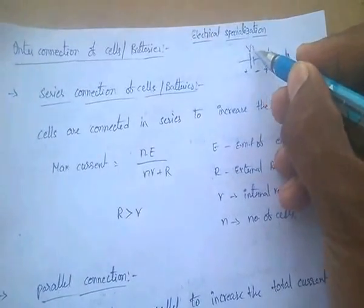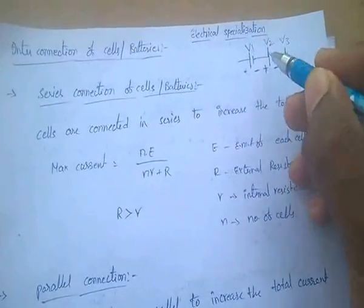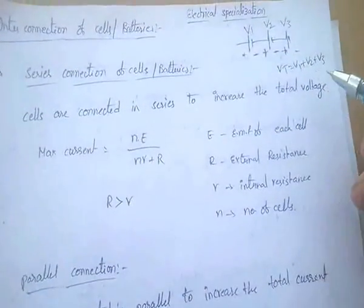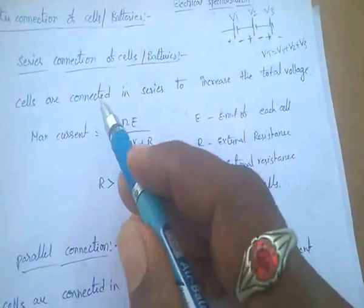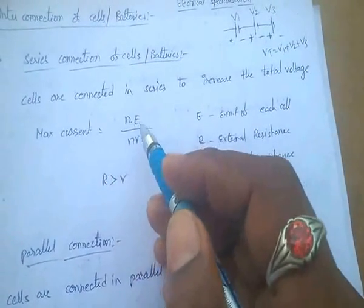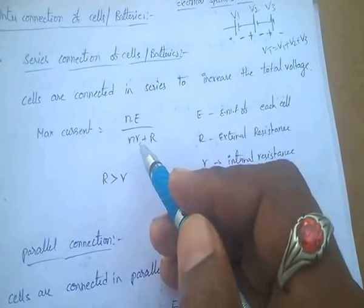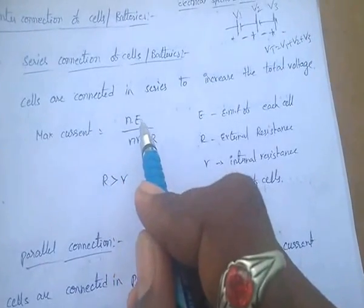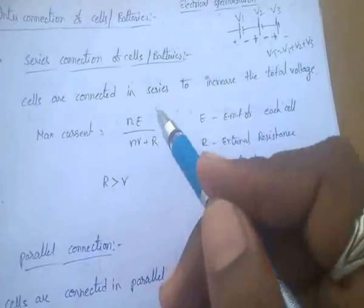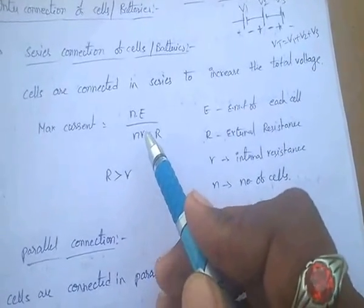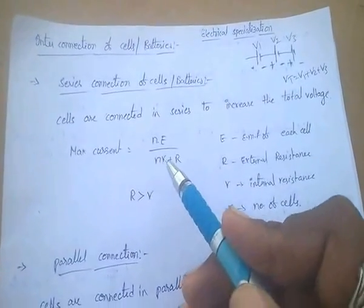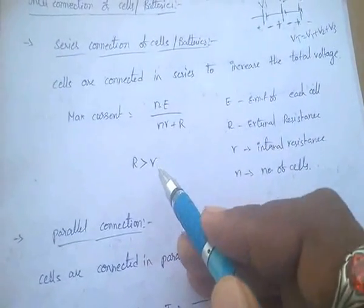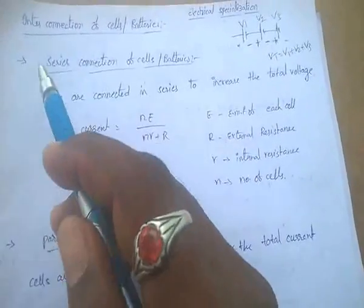Cells are connected in series to increase the total voltage. The voltages of individual cells are V1, V2, V3, so the total voltage V_total equals V1 plus V2 plus V3. The maximum current in this case is: I = N×E / (N×r + R), where N is the number of cells, E is the EMF of each cell, small r is the internal resistance, and capital R is the external resistance. The external resistance is always greater than the internal resistance. Series connection is used to increase the total voltage.